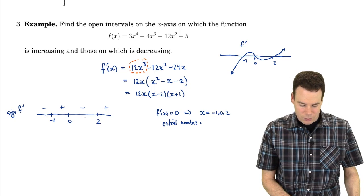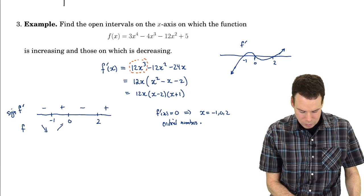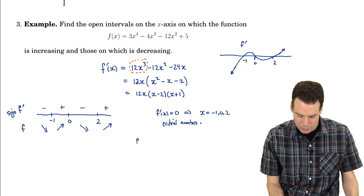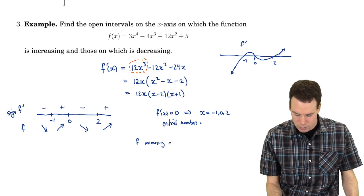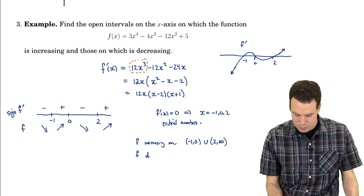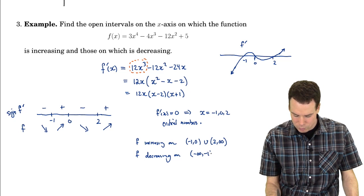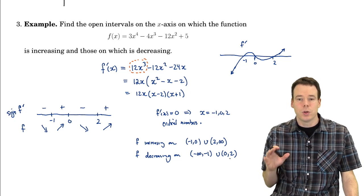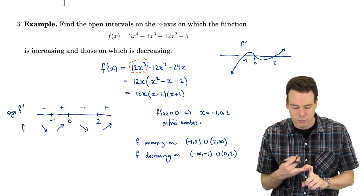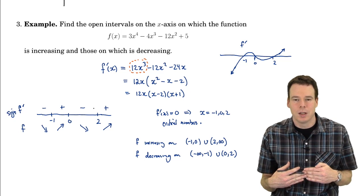Now we know exactly where the function is increasing and decreasing — it's increasing wherever the derivative is positive. The function is decreasing, then increasing, then decreasing, then increasing. So f is increasing on (-1, 0) union (2, ∞), and f is decreasing on (-∞, -1) union (0, 2). We wanted to find where f was increasing and decreasing, so we did a sign analysis on its derivative, and from that we get the information about the original function.